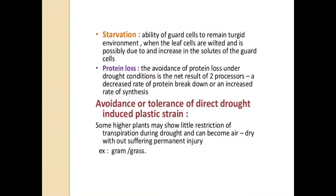Starvation is defined as the ability of guard cells to remain turgid when the leaf cells are wilted, and is possible due to an increase in the solute concentration of the guard cell. Protein loss: the avoidance of protein loss under drought conditions is the net result of two processes — a decreased rate of protein breakdown and an increased rate of protein synthesis.